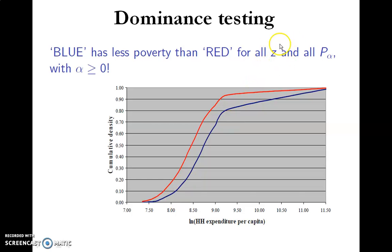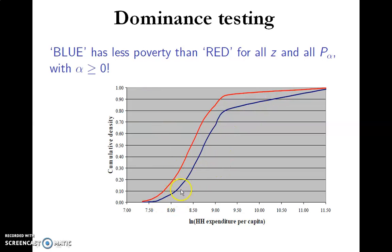This means that irrespective of the poverty line chosen — denoted by z — and irrespective of the alpha value of your absolute poverty index, whether alpha equals 0, 1, or 2, people in society blue have less poverty at all FGT values and for any poverty line you use. Remember, P0 is your headcount ratio, P1 represents the depth of poverty, and P2 is your severity of poverty.